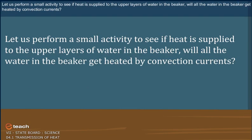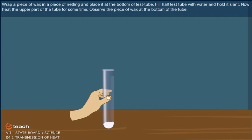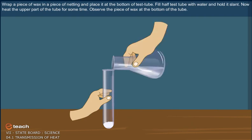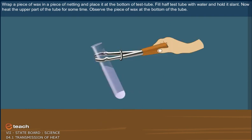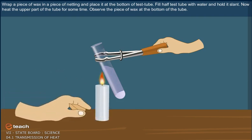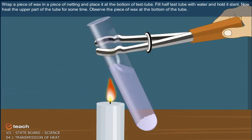Let us perform a small activity to see if heat is supplied to the upper layers of water in the beaker, will all the water in the beaker get heated by convection currents? Wrap a piece of wax in a piece of netting and place it at the bottom of test tube. Fill half test tube with water and hold it slant. Now, heat the upper part of the tube for some time.